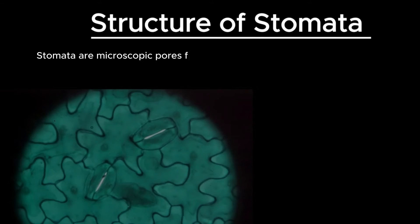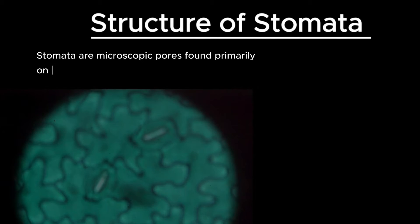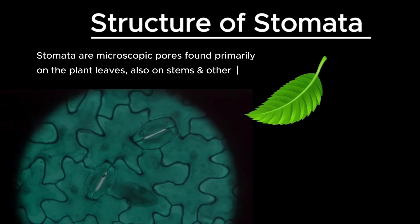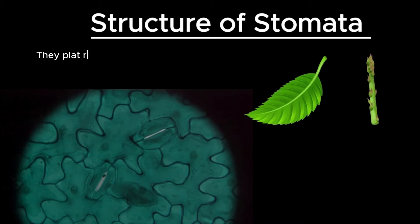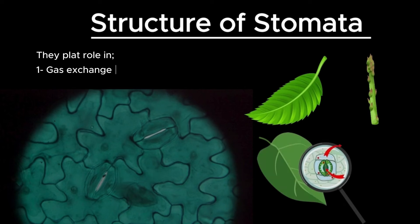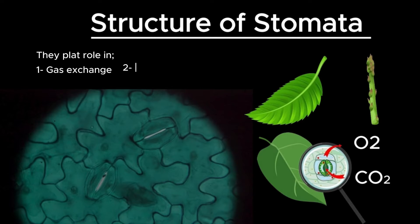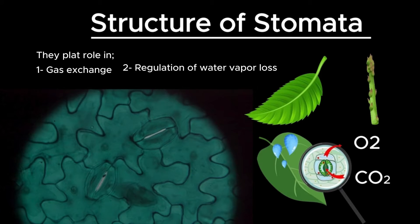Stomata are microscopic pores found primarily on the surfaces of plant leaves, though they can also occur on stems and other plant parts. These pores play a vital role in gas exchange, allowing for the uptake of carbon dioxide needed for photosynthesis and the release of oxygen produced during photosynthesis, as well as the regulation of water vapor loss through transpiration.